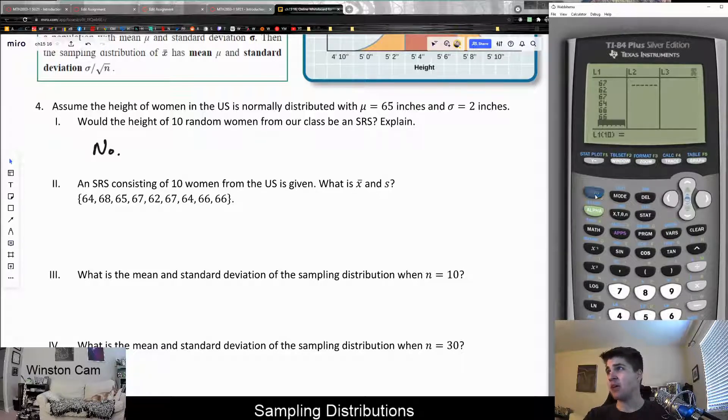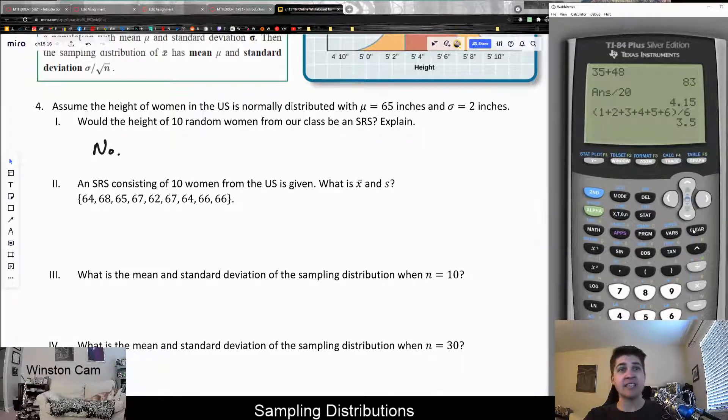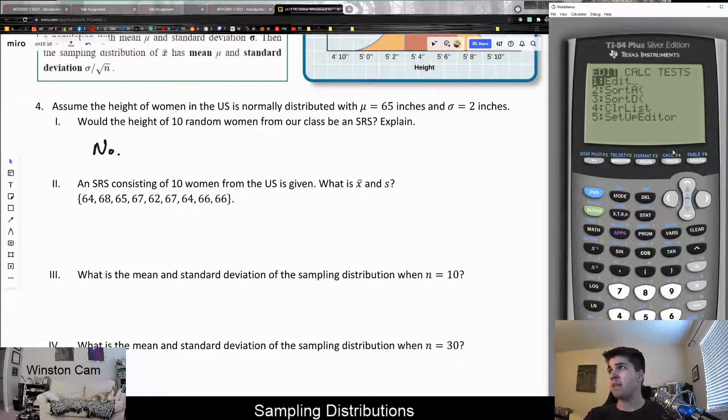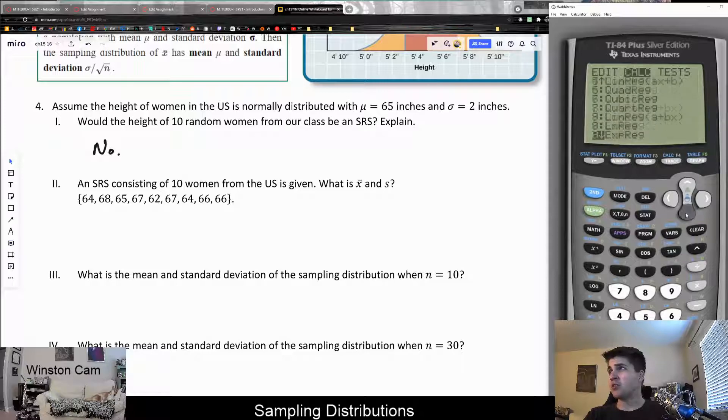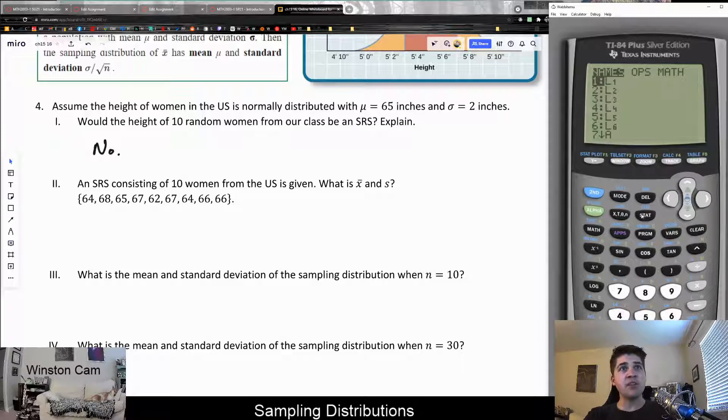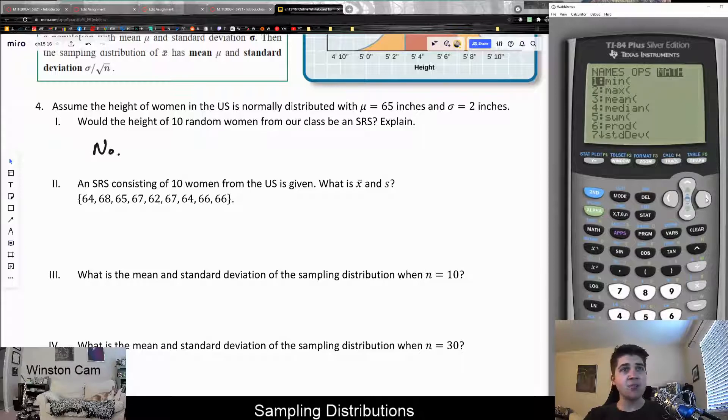Now we have our data in our list. So, how do we calculate the mean and the standard deviation? Well, if we go back to the main menu, this is where the calculator calculates things. And this is at least how I like to do it. But if you go into the stat menu, notice there's an option, calculate. And this is where a lot of the things are. You can actually look through a lot of what's in here. Actually, sorry, it's in the list menu, I'm mistaken.